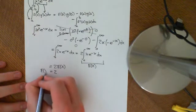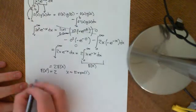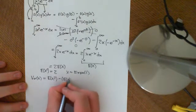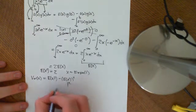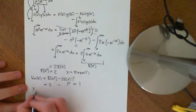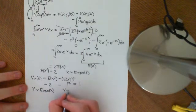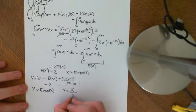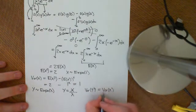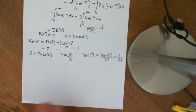Since E[x] equals 1, we get E[x²] equals 2. Therefore, Var(x) equals E[x²] minus (E[x])² equals 2 minus 1 squared equals 1. Now, since the general exponential distribution y ~ Expo(λ) can be written as y equals x divided by lambda, we get Var(y) equals Var(x)/λ² equals 1 over lambda squared. So the variance of a general exponential distribution is 1 over lambda squared.